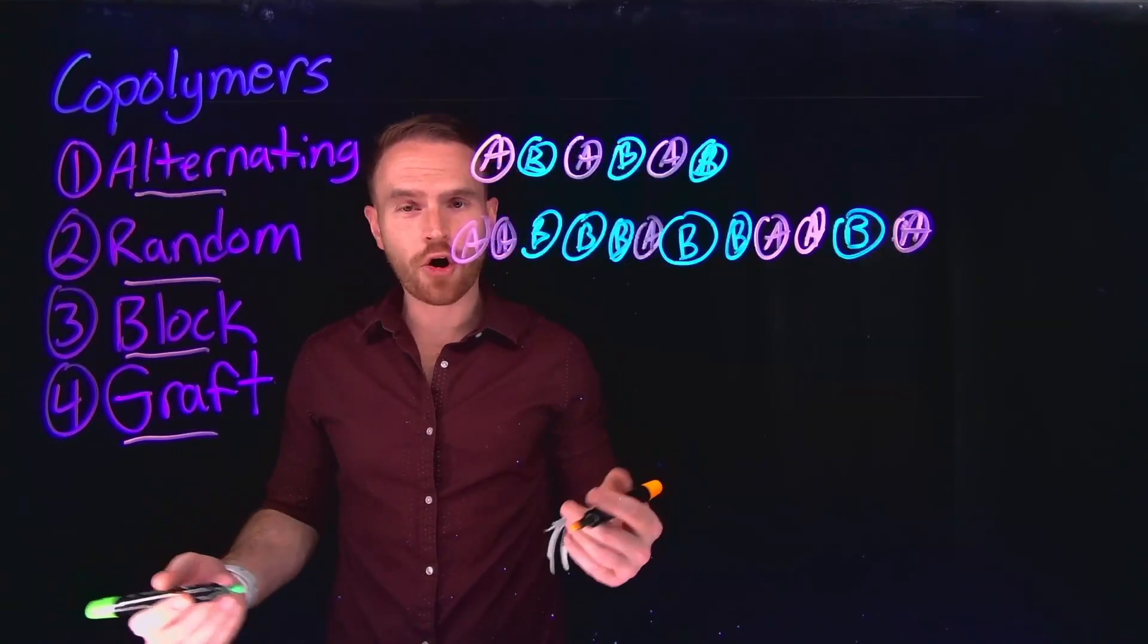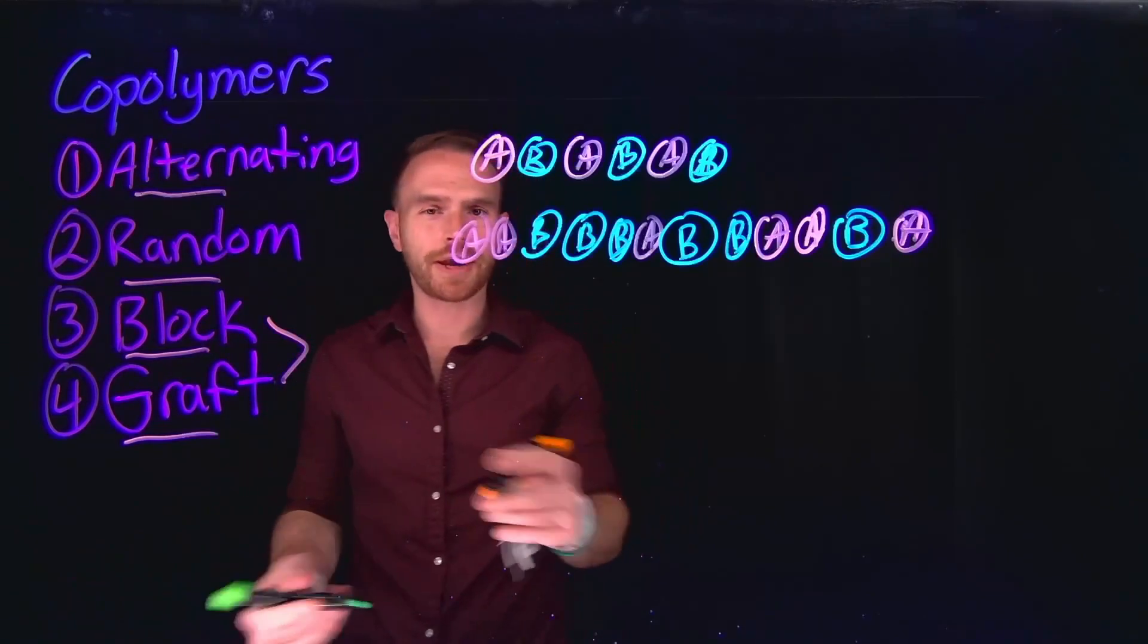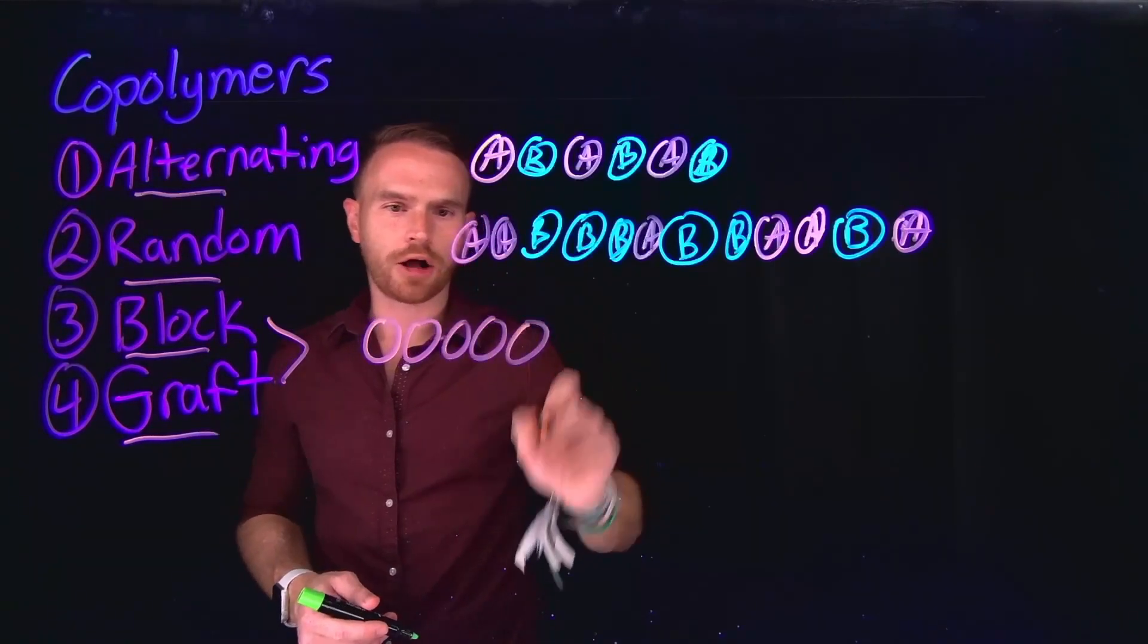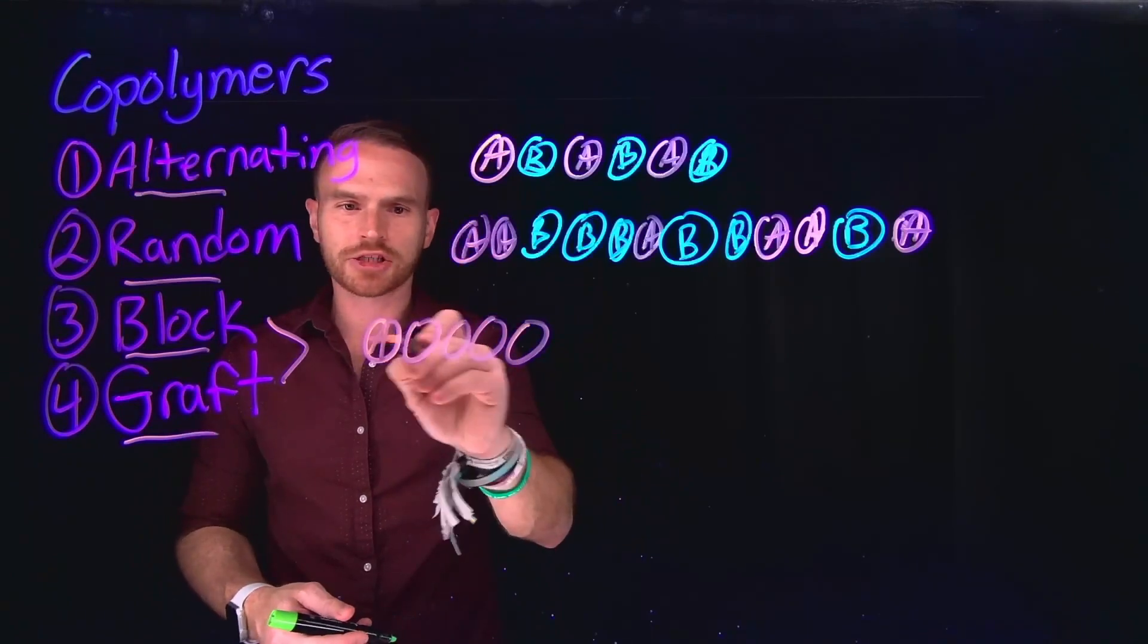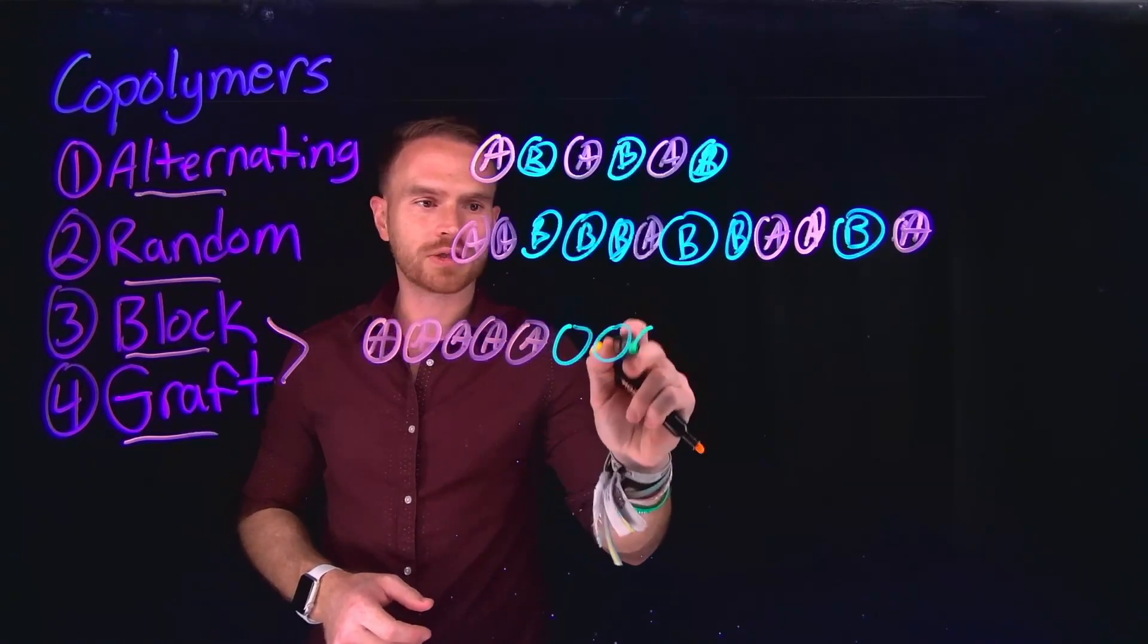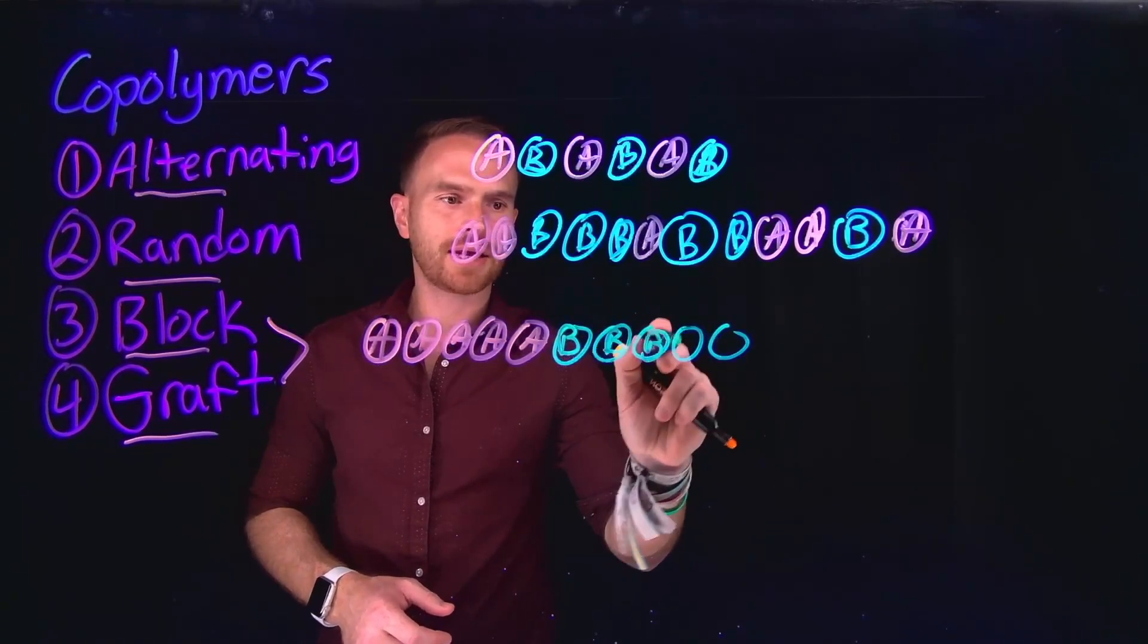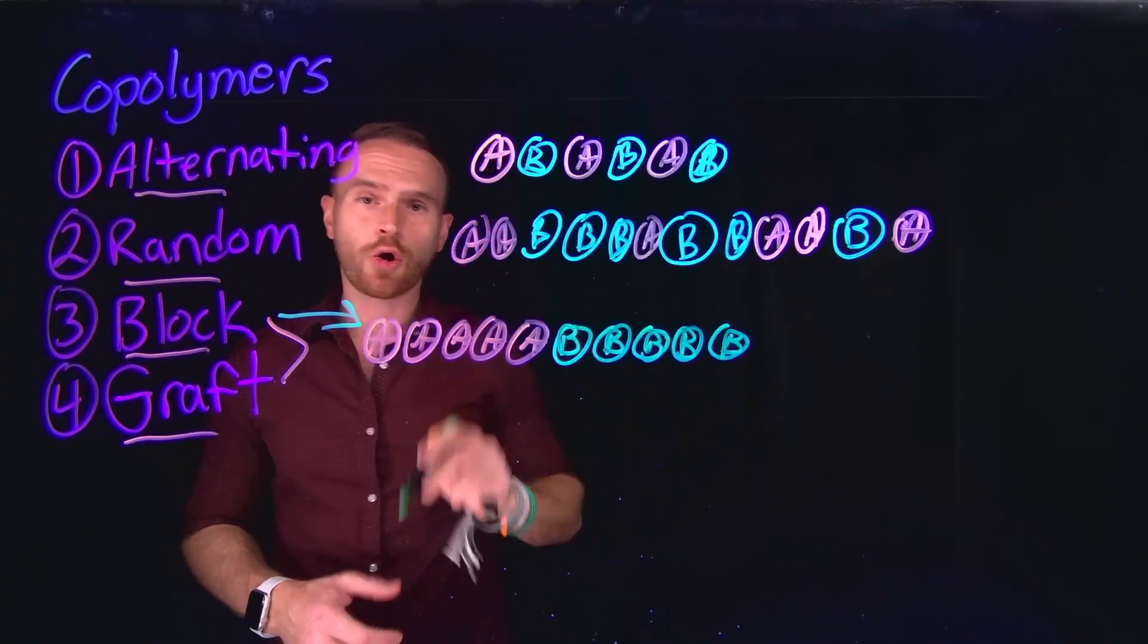Copolymers comprised of homopolymer subunits are called block or graft polymers depending on how they are constructed. For example, if you had a homopolymer that was five subunits of the A chain and it were to combine with another homopolymer that was five units of the B homopolymer, they could come together to form what is called a block copolymer.